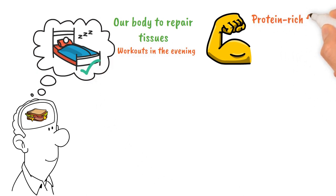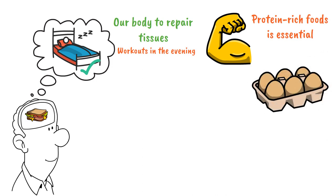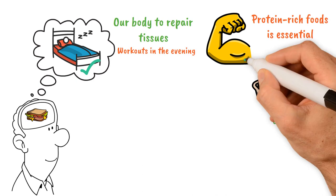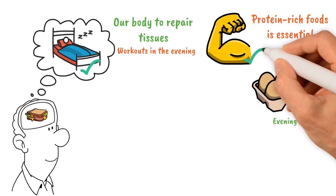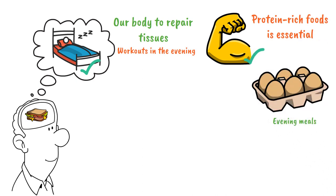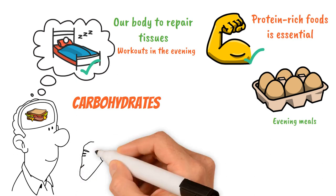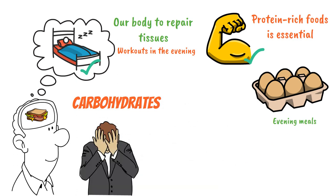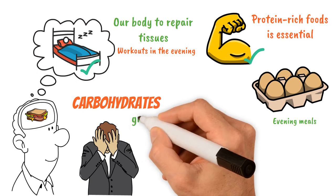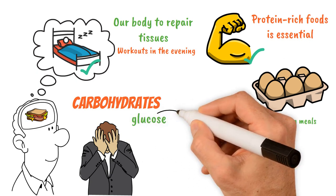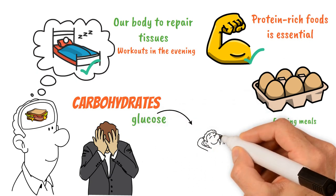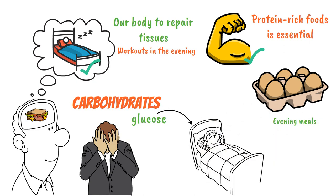Consider making protein the primary component of your evening meals. When most of your calories come from protein, your body can effectively repair muscles and tissues while you sleep. On the other hand, relying heavily on carbohydrates for your nighttime meal can hinder the muscle recovery process and may lead to waking up feeling bloated and lethargic. This happens because the glucose from the carbohydrates cannot be adequately processed while you are asleep.